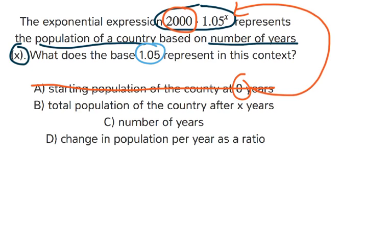B, total population of the country after x years. So yes, it's true, you can find the total population of the country after x years using the base of 1.05 and using x, but it doesn't really say that the base 1.05 is the total population. So I'm going to cross that off as well.